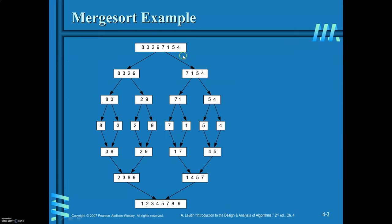This is the recursive tree call for merge sort with 8 elements. The array is first divided into two subarrays of 4 elements each, then further divided into 4 subproblems, and again into 8 smaller subproblems. At that point, the divide step is over and the conquering step begins — merging smaller subarrays to get the sorted list.